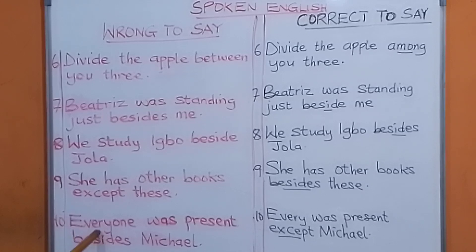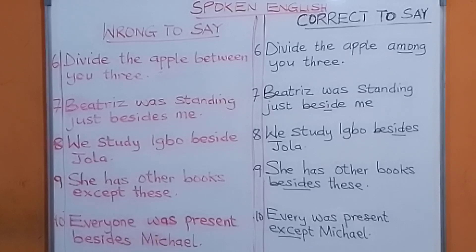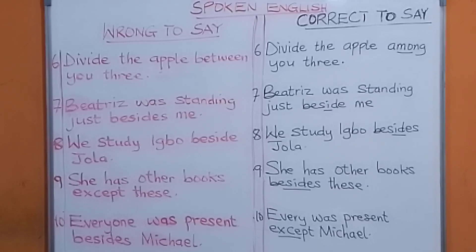Number ten: do not say 'everyone was present besides Michael.' If you want to say Michael is not part of it, you have to say 'everyone was present except Michael.' 'Except' means leaving out — don't include this one. Everyone was present, leaving out Michael — Michael is not part of it.